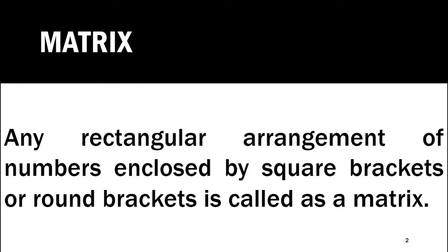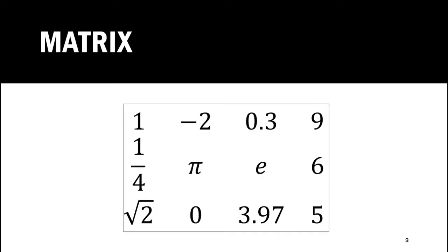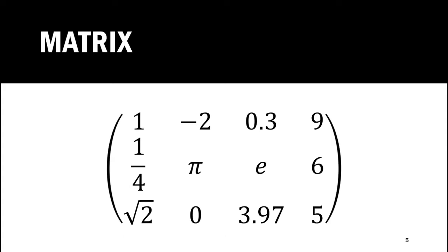Any rectangular arrangement of numbers enclosed by square brackets or round brackets is called as a matrix. This is a rectangular arrangement of numbers — if we enclose it in either a square bracket or round bracket, it is called as a matrix.